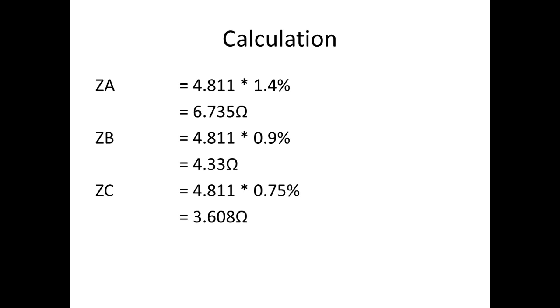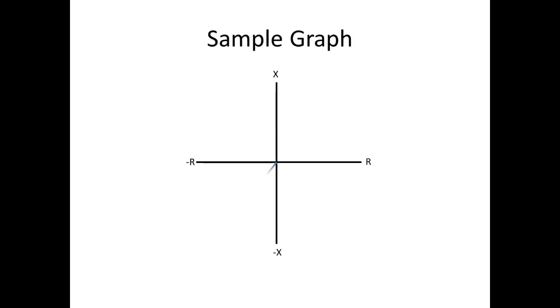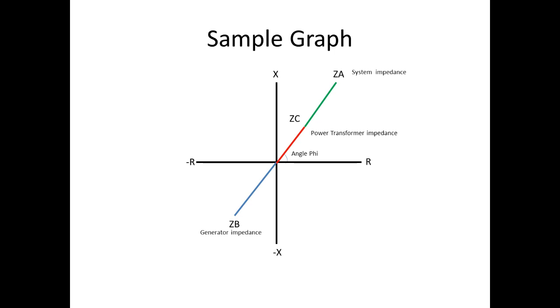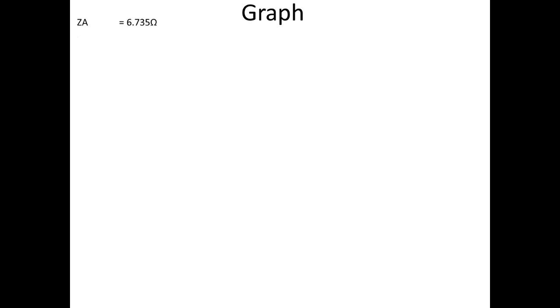Now we can see a sample graph. The x-axis is the R value (resistance) and the y-axis is the reactance value. ZB is the generator impedance, ZC is the transformer impedance, and ZA is the system impedance. For ZA, ZB, and ZC, all the values taken for calculation are reactance values.